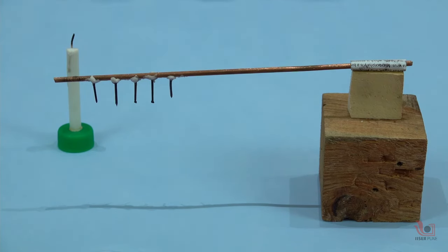Fix the nails on the copper rod with the help of candle wax as shown. Maintain a distance of about 2 cm between two nails. Insert the other end of the copper rod into the paper roll as shown.